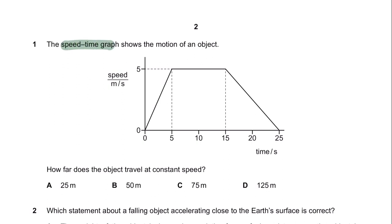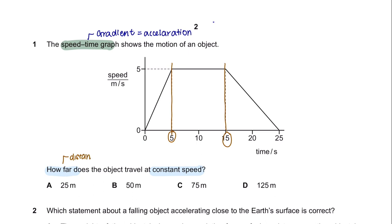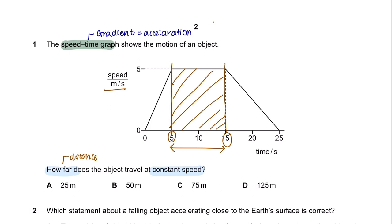Question 1. The speed-time graph shows the motion of an object. Remember that in a speed-time graph, the gradient of the graph will represent its acceleration. How far does the object travel at constant speed? The object is traveling at a constant speed from 5 seconds to 15 seconds. When asked to calculate distance for a speed-time graph, calculate the area beneath the graph. From 5 to 15 seconds, this is a square shape, so we take height 5 multiplied by base 10, giving us 50. The answer is B.